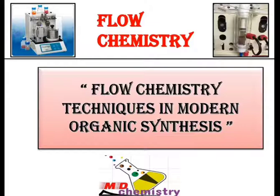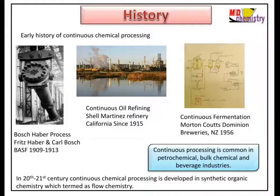We have two methods. First is the batch process, which we have already performed in the laboratory — reactions performed in test tubes, round bottom flasks, or conical flasks. The flow process requires one machine in which the entire setup is ready: you add the reactant and get a product. The reaction happens inside that small machine — that is the flow technique, a new technique.